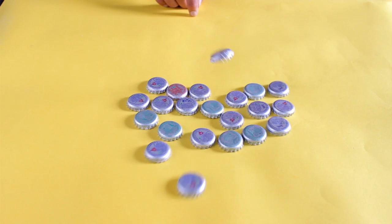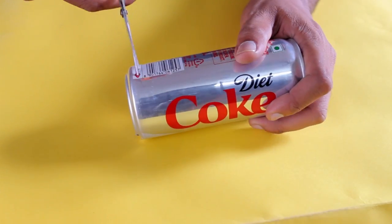What's up everybody, today I'm gonna show you how to make whistles out of bottle caps like this. Let's get started. For making tiny whistle, we need bottle caps and an empty coke tin.